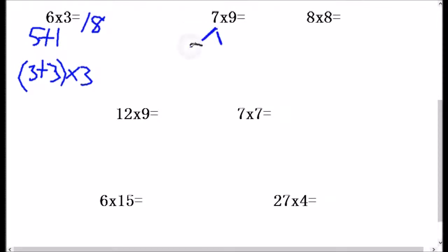I'm going to break this 7 up into 5 plus 2 times 9. 9 times 5 is 45. Plus 9 times 2 is 18. And then 45 plus 18. Kind of a harder one to do mentally. 63.